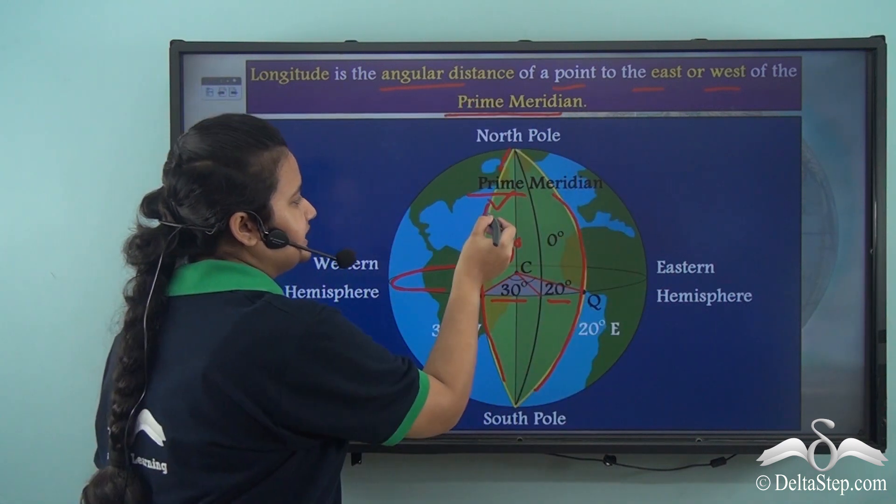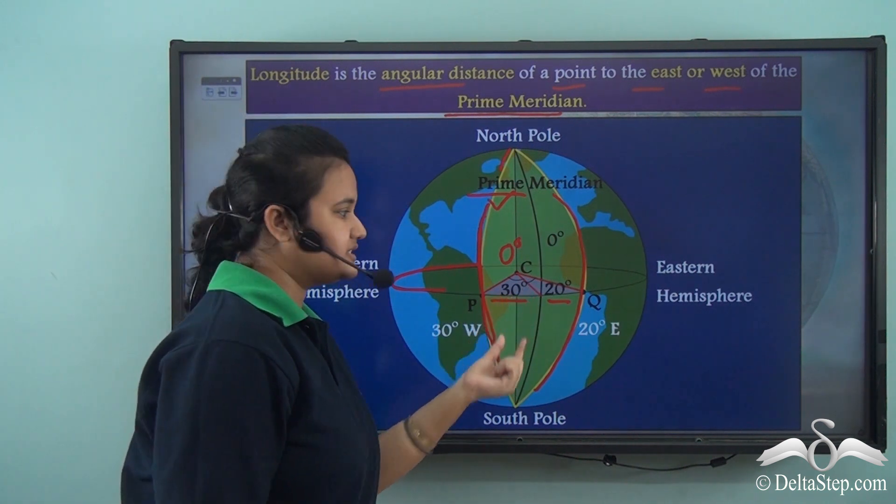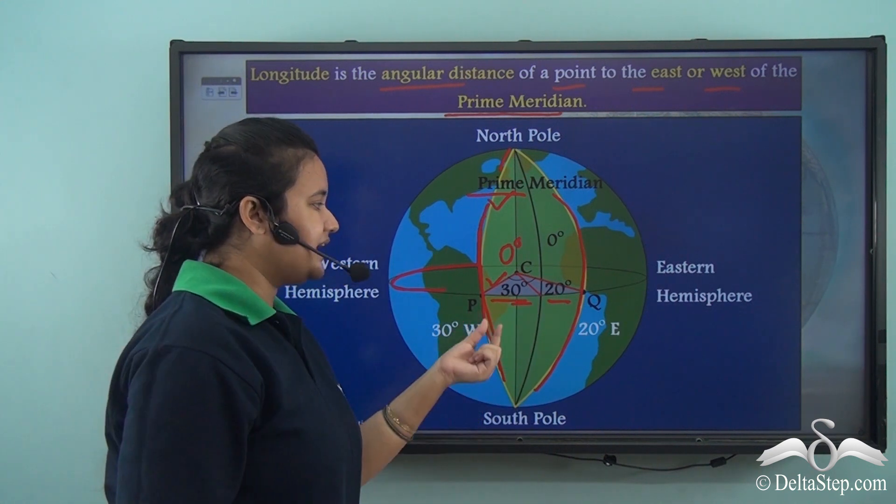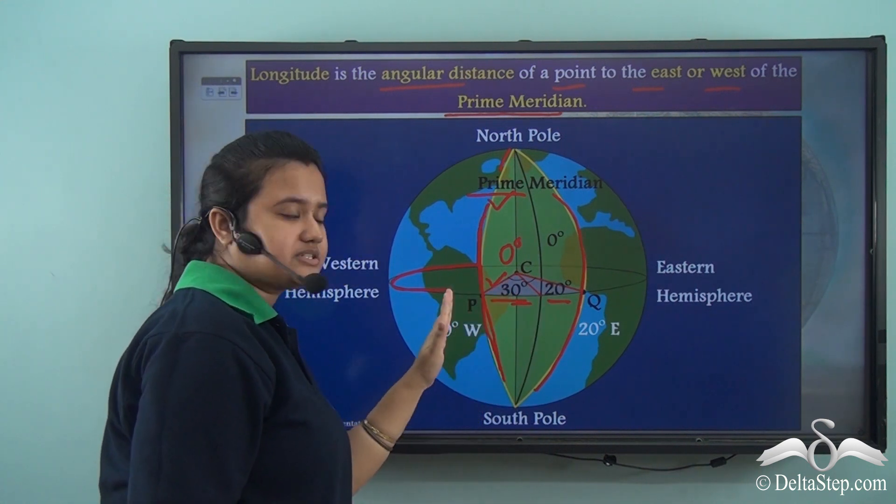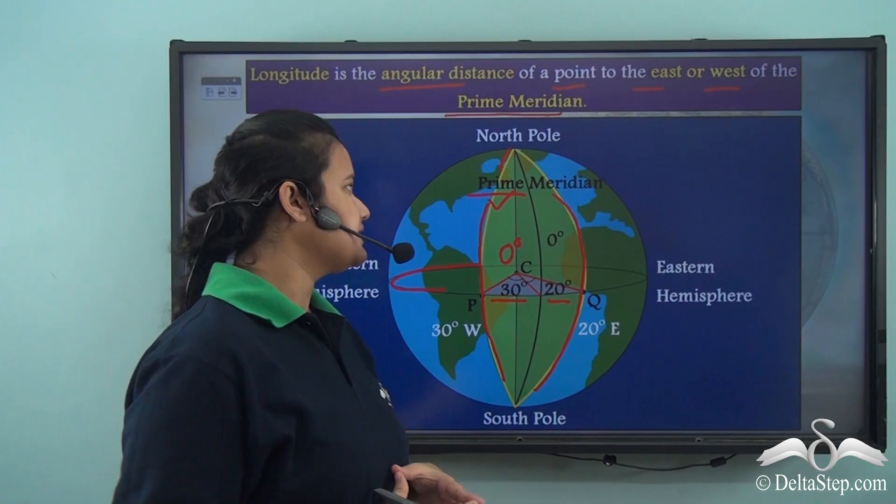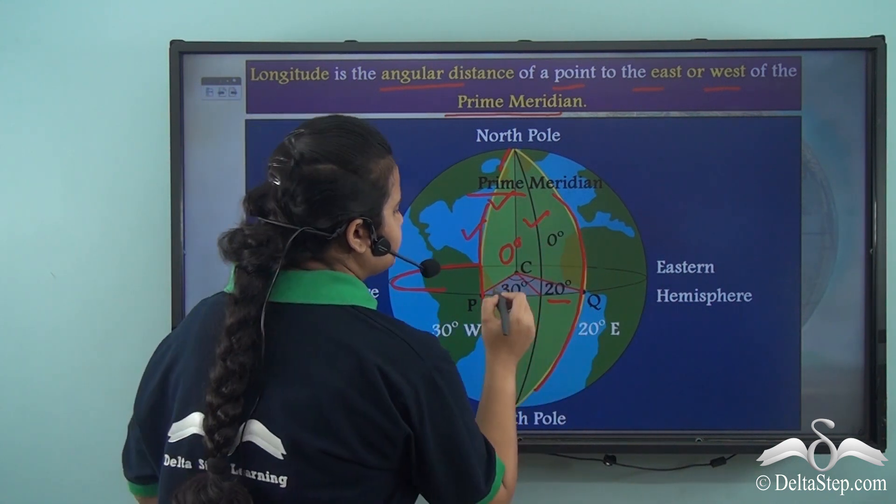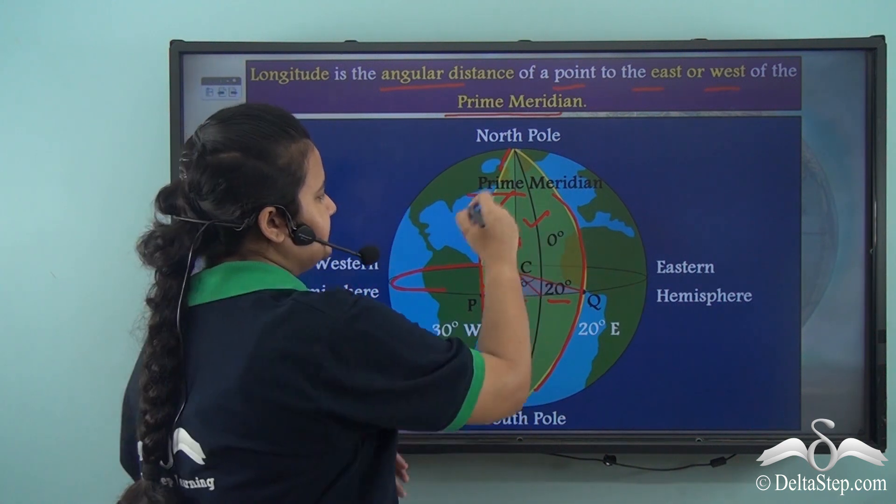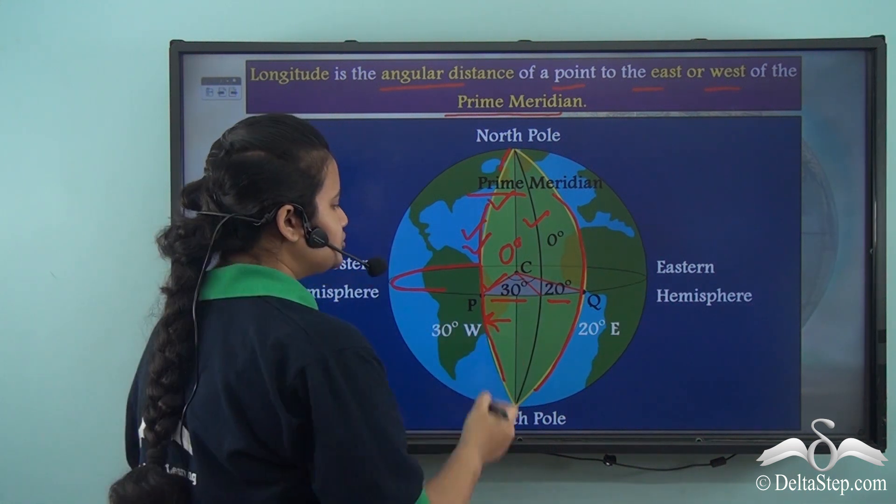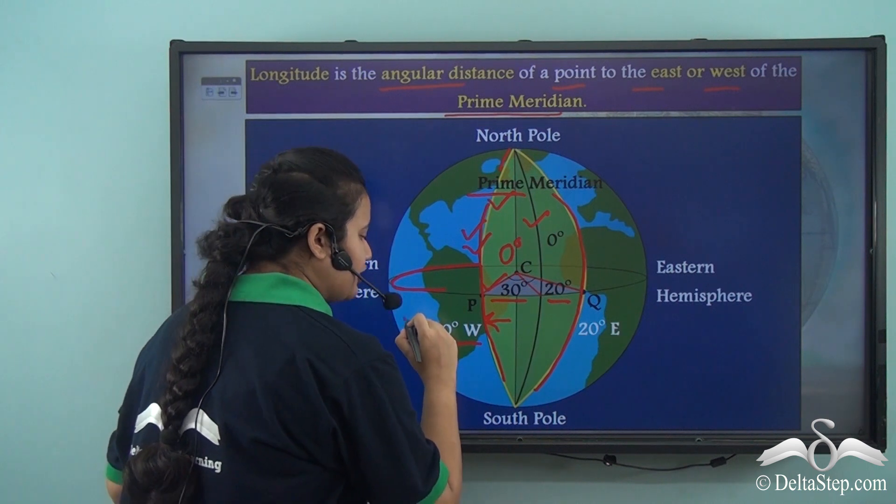This longitude is situated at an angular distance of 30 degree from the prime meridian or it lies 30 degree west to the prime meridian. The angular distance between this line and the prime meridian is 30 degree. And since this line lies to the west of prime meridian, this particular line is known as 30 degree west longitude.